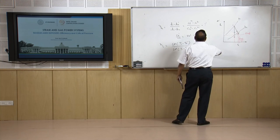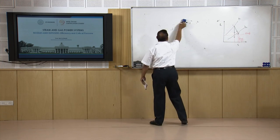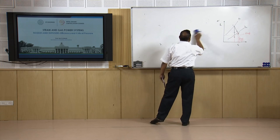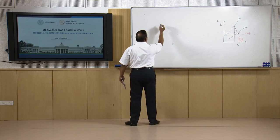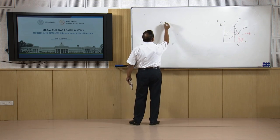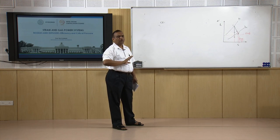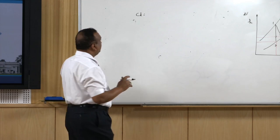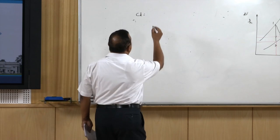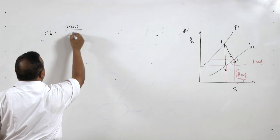There is another term in nozzles: the coefficient of discharge c_d. The coefficient of discharge is the ratio of actual flow to the ideal flow.